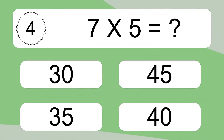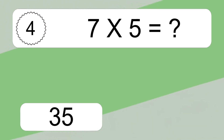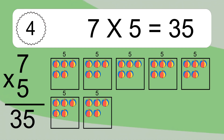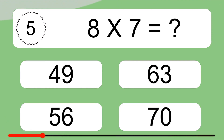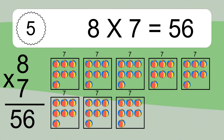7 times 5 equals what? We have 8 boxes, and each box has 7 colorful balls inside. If you count all the balls in all the boxes together, you will have 8 times 7 balls. This equals 56 balls.